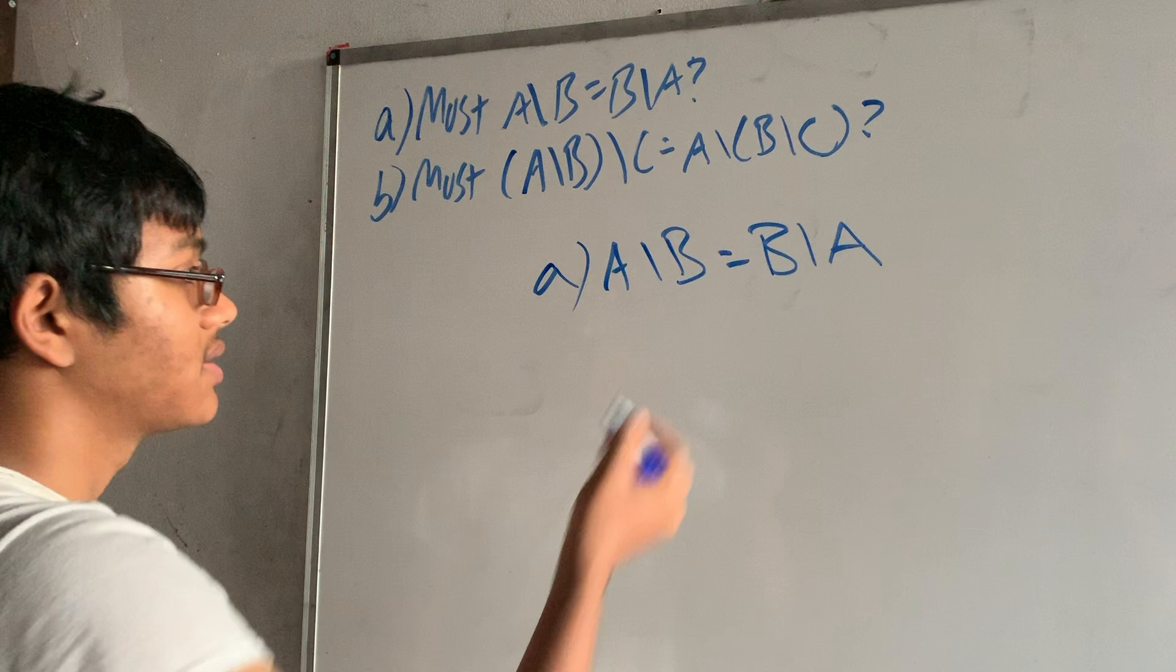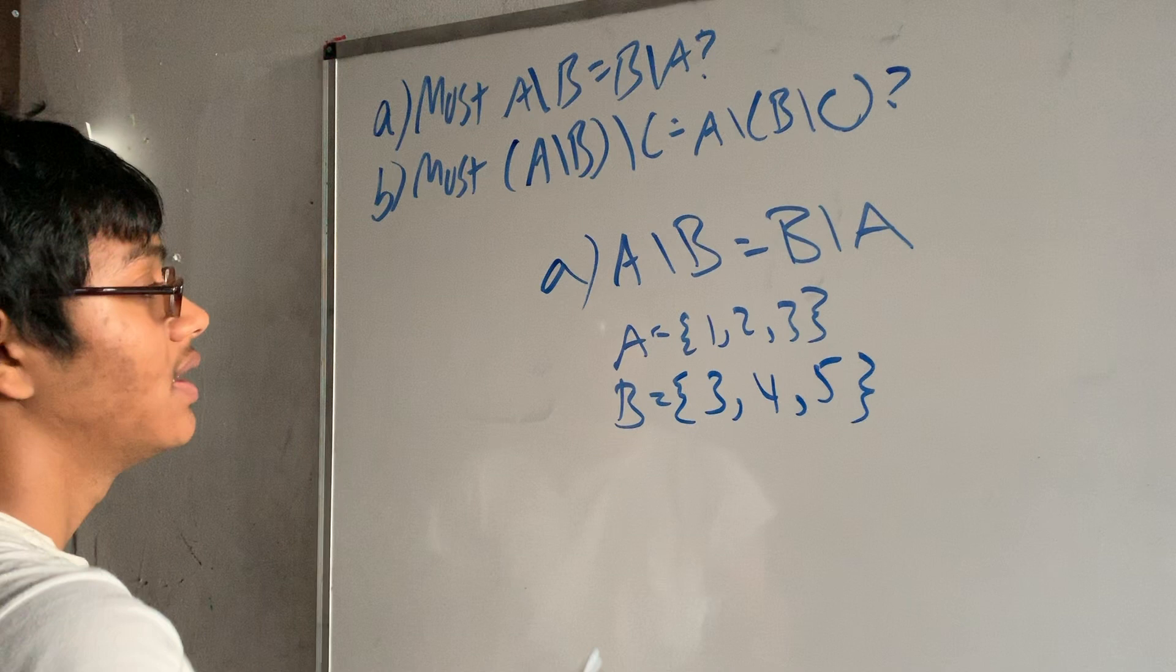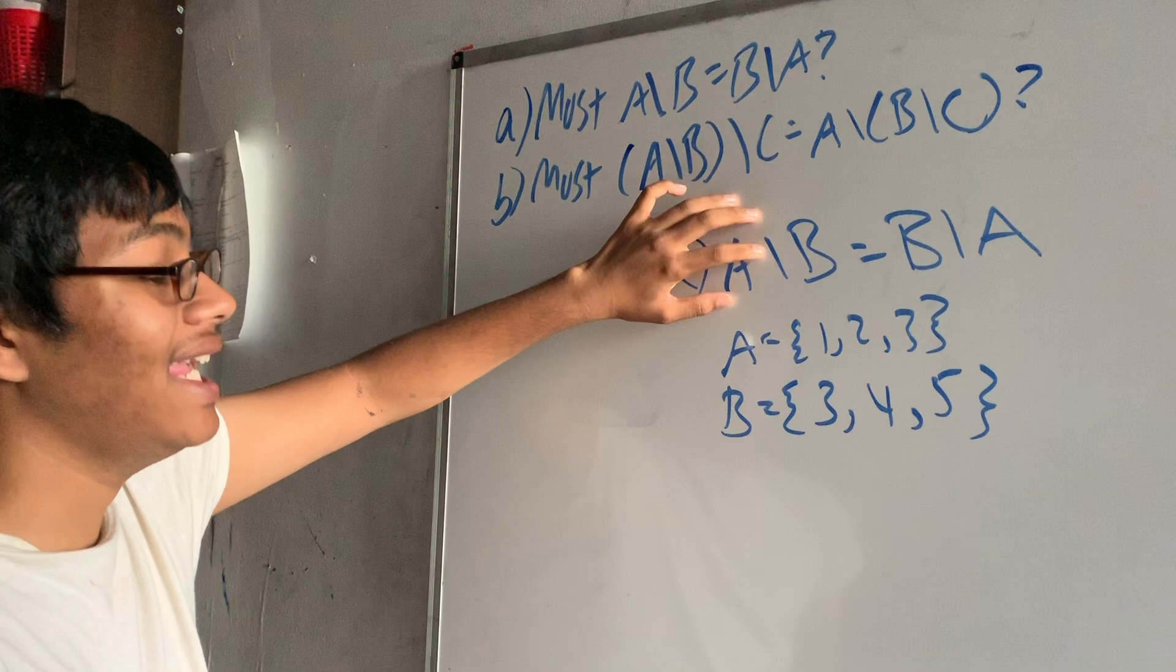So let's say set A is {1, 2, 3} and let's say for set B we have {3, 4, 5}. So when we say the difference between sets A and B, we're talking about all the elements in set A that are not in B.